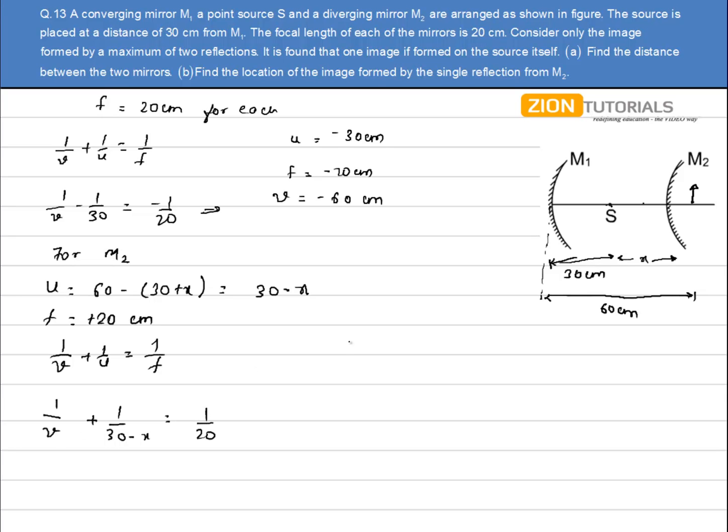Now, I want the image to be formed at the source itself. So it will be equal to minus x. So minus 1 by x plus 1 by (30 minus x) equals 1 by 20.